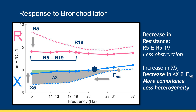In the clinical setting, these measurements from oscillometry tests can be used to assess responsiveness to bronchodilator. Current guidelines suggest a significant bronchodilator response with at least a 40% decrease in low-frequency resistance, 50% increase in low-frequency reactance, and 80% decrease in AX compared to the baseline measurements.